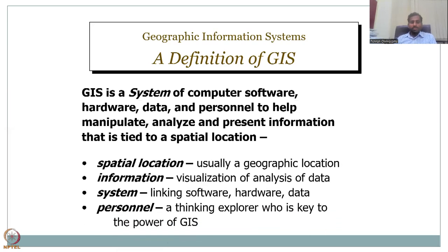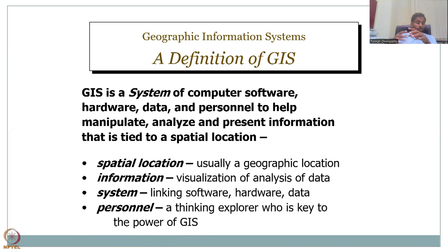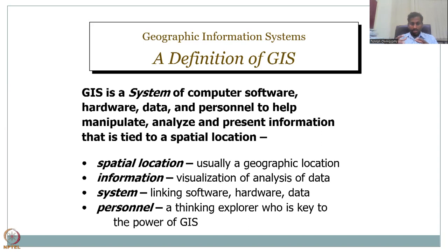GIS is a combination of software and hardware — that's why it's called a system. If we say GIS is a system, it includes computer software, which is QGIS for example, and hardware, which is your computer, your scanner, etc. With the software and hardware, there is data that comes in, and the person — the GIS user — all these have to come together for a GIS system. Because the user controls what data comes in and controls the software and what tools to use. Then you manipulate, analyze, and present the information as a spatial location.